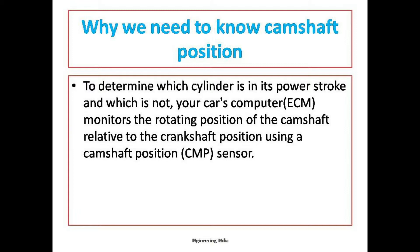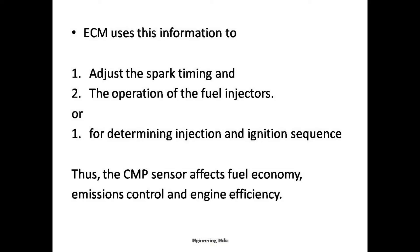The ECM monitors the rotating position of the camshaft relative to the crankshaft. It gathers data from both the CKP and CMP sensors and combines both data sets to get the accurate position of the piston inside the cylinder. From the top, the CMP sensor provides data from the camshaft, and from the bottom, the CKP sensor provides data from the crankshaft position sensor.